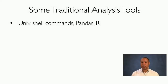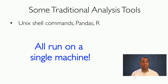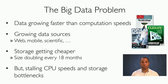Some of the traditional analysis tools that we use include Unix shell commands, pandas, and R. One of the things that all of these tools have in common is they all run on a single machine. The big data problem means that data is growing faster than computation speeds. We have many different sources of data, and those sources of data are growing.